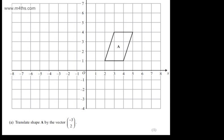This is question number six. In part A for one mark, we're asked to translate shape A by the vector minus 3, 2. We're going to be moving the shape 3 to the left and 2 up.